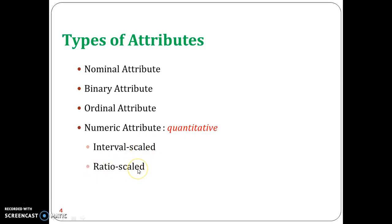The numeric attribute contributes to the quantitative attribute, whereas nominal, binary, and ordinal attributes are called qualitative attributes. The reason behind this we shall see in a future slide.